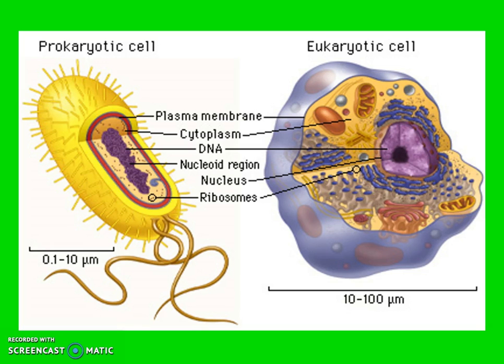Before we get into that, I wanted to go over two key terms: the prokaryotic cell and the eukaryotic cell. Take a minute and look to see if you can find some things that are similar and some things that are different. If you look, you notice that the eukaryotic cell is the cell that we've been talking about. It's got your nucleus, Golgi, ER, mitochondria, vacuoles — all the organelles that we've talked about.